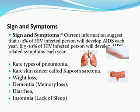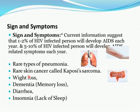Signs and symptoms of HIV and AIDS: current information suggests that 1–2% of HIV infected persons will develop AIDS each year, and 5–10% will develop AIDS-related symptoms each year. Symptoms include a rare type of pneumonia affecting the lungs, a rare type of skin cancer called Kaposi's sarcoma, weight loss, dementia (memory loss), diarrhea, and insomnia (lack of sleep). These are the clinical features of AIDS or HIV-positive patients.